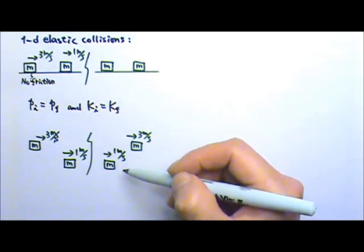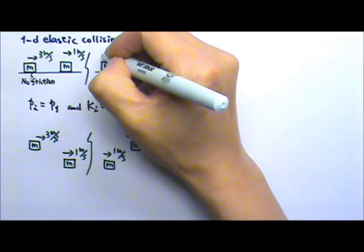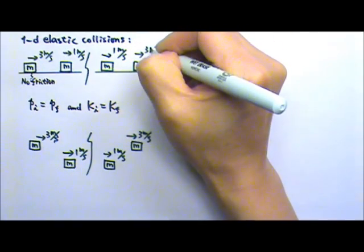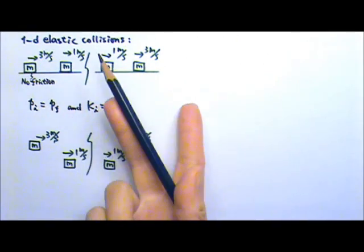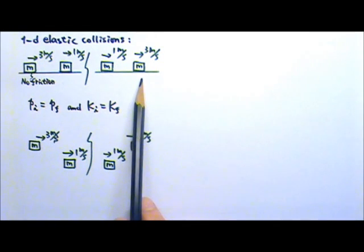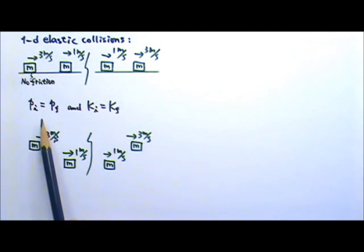One meter per second to the right and three meters per second to the right. The two boxes simply switch velocities. Since the two boxes have the same mass, this outcome keeps both momentum and the kinetic energy the same before and after the collision.